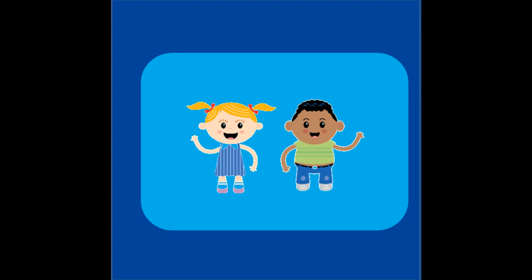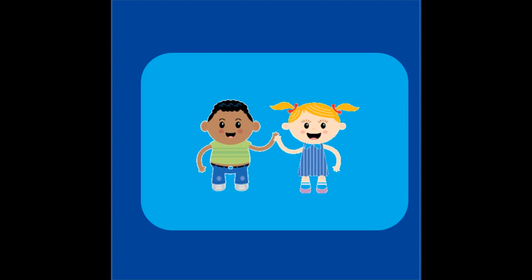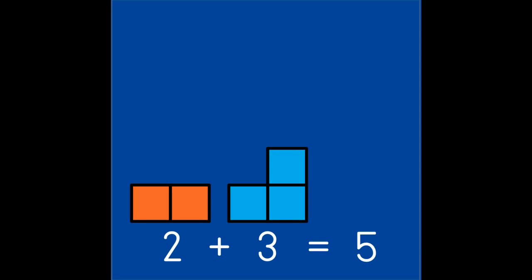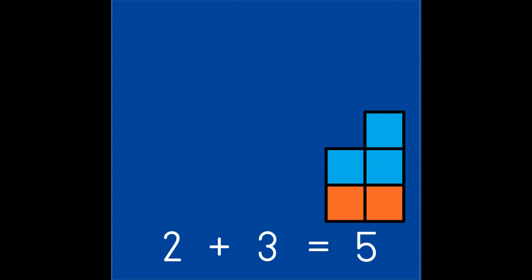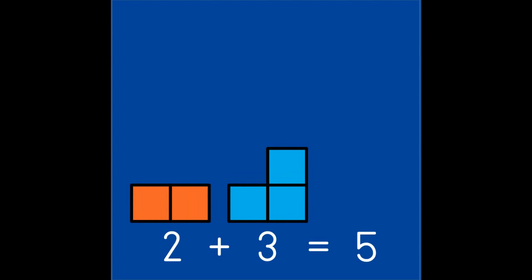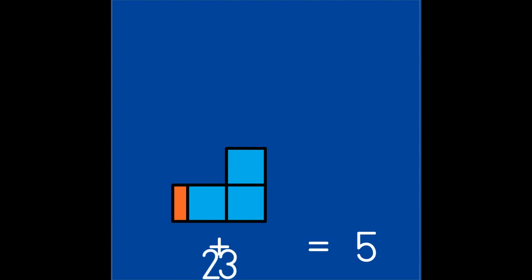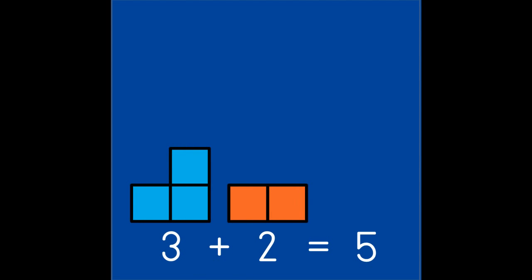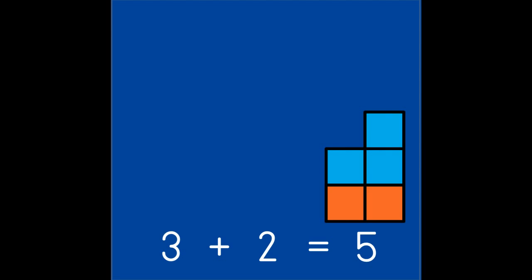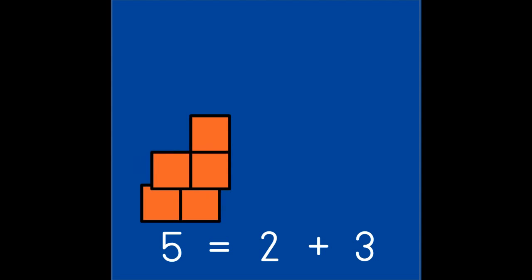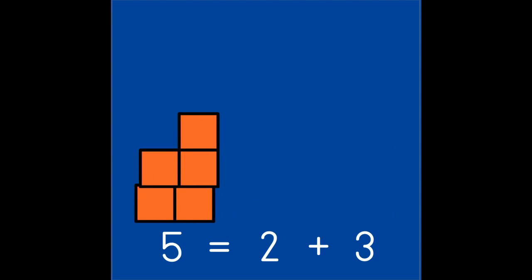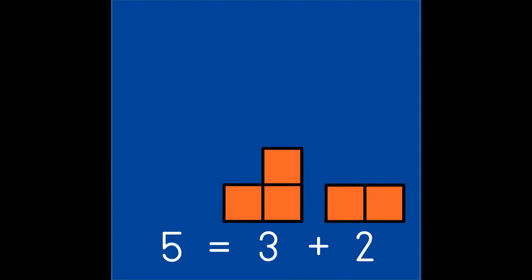Just as partners who work together can switch places, number partners can switch places. We can say two and three are partners of 5, or we can say three and two are partners of 5. We can also say that 5 has partners 2 and 3, or that 5 has partners 3 and 2. So as you can see, it does not matter which partner comes first.